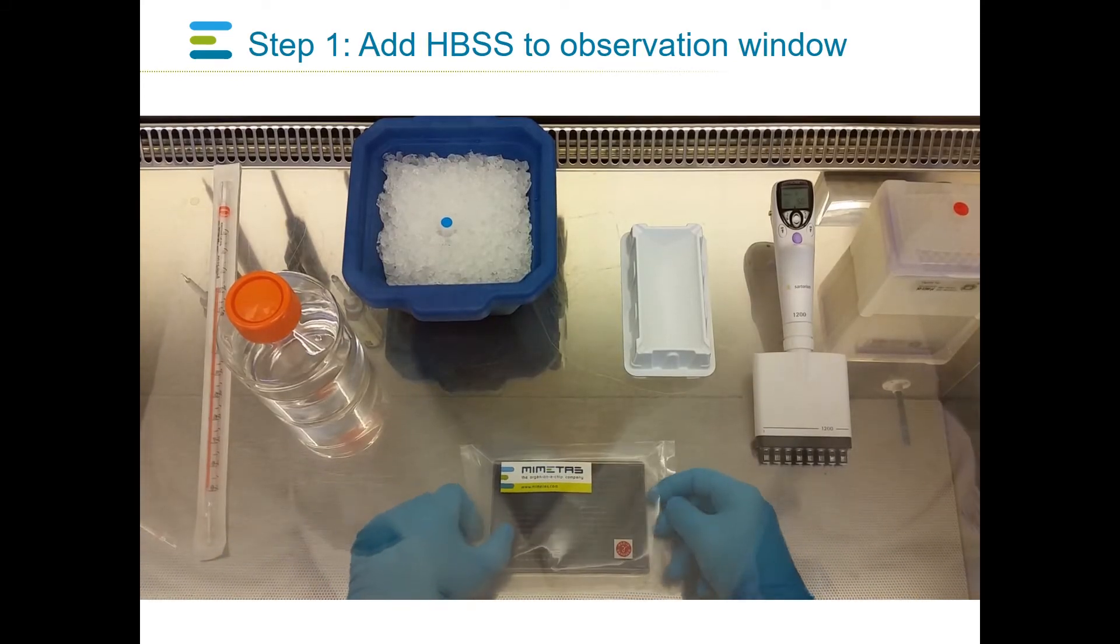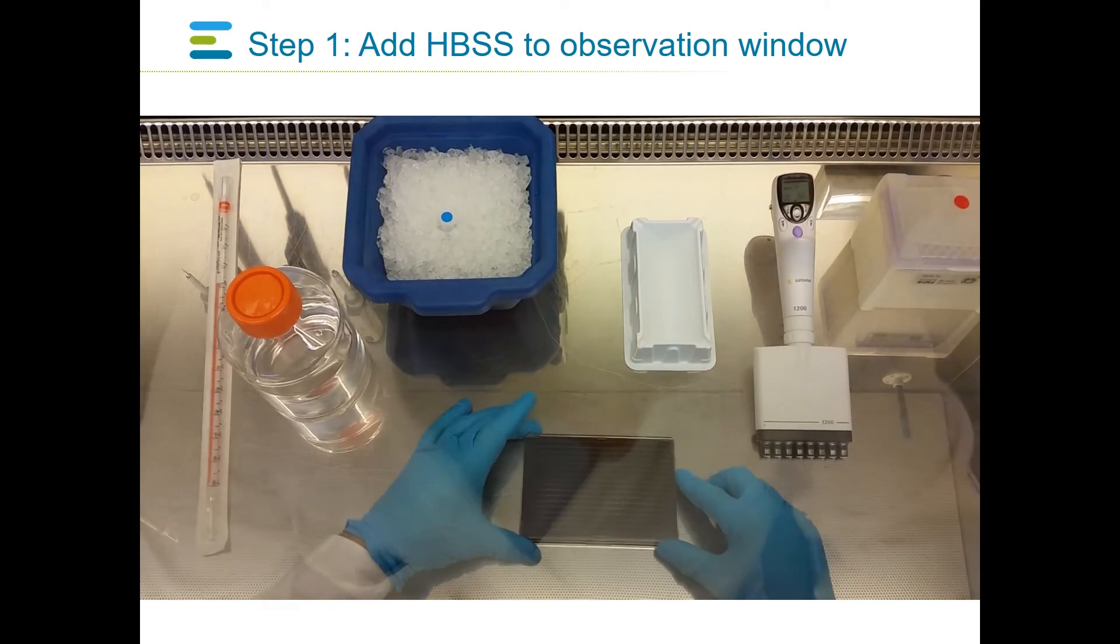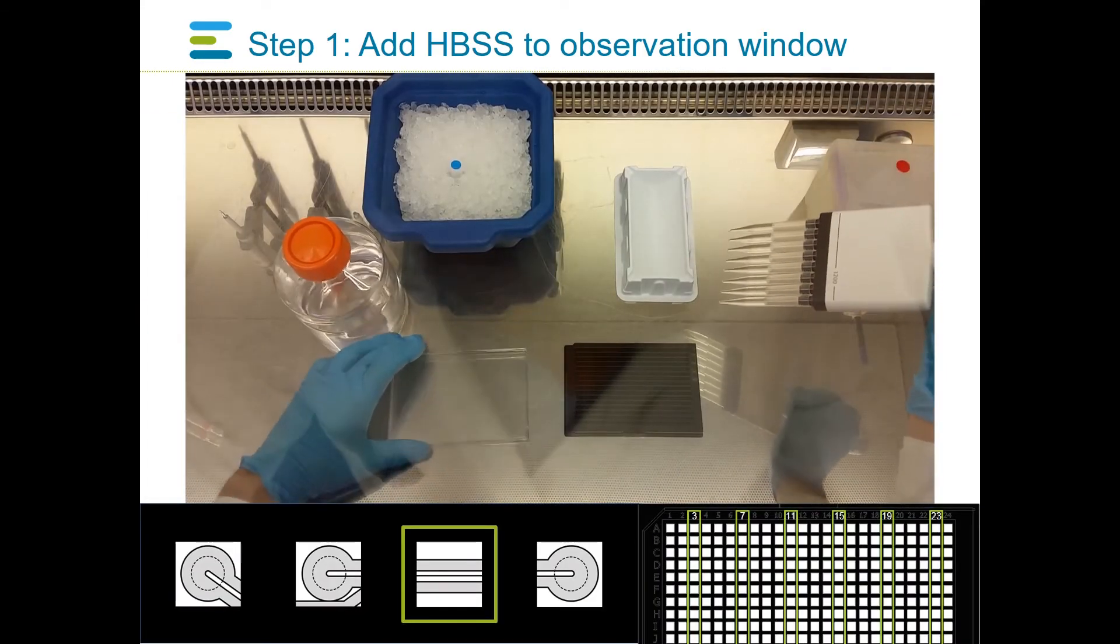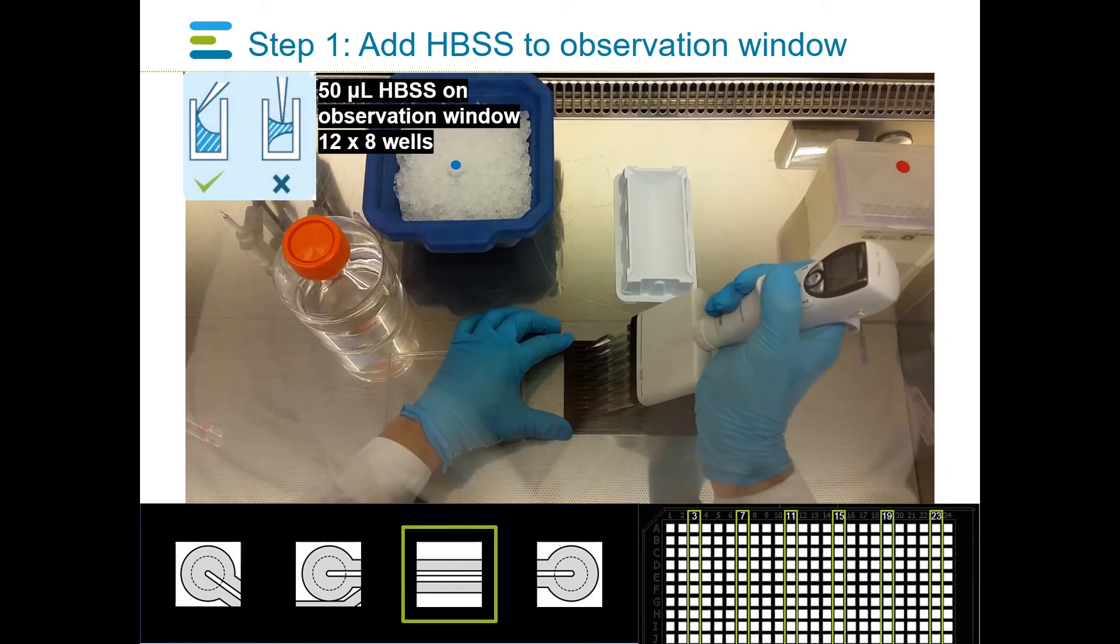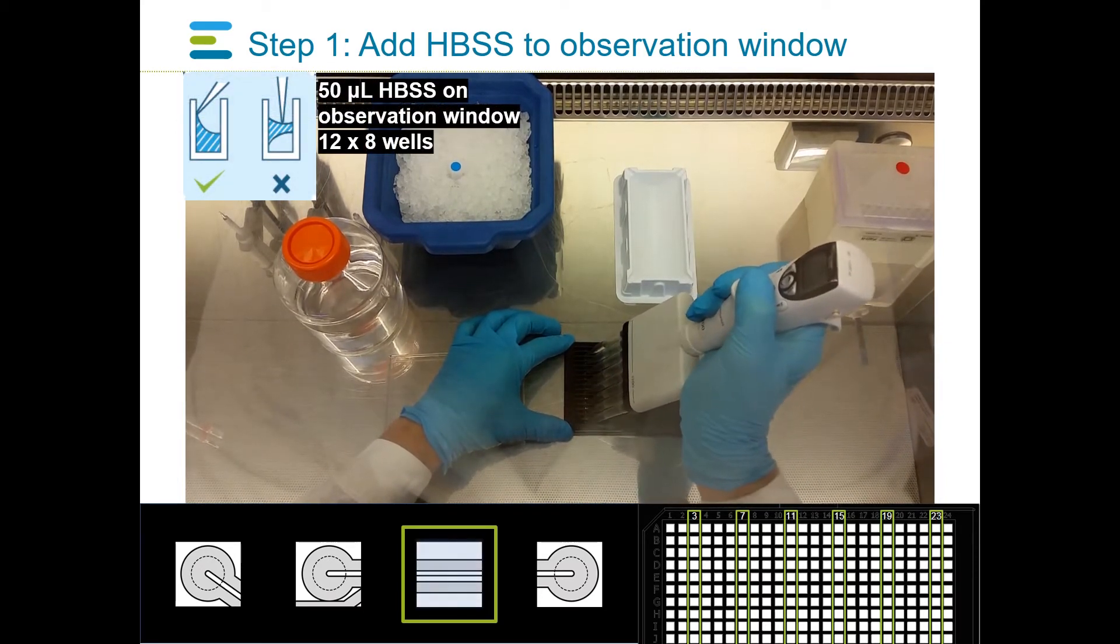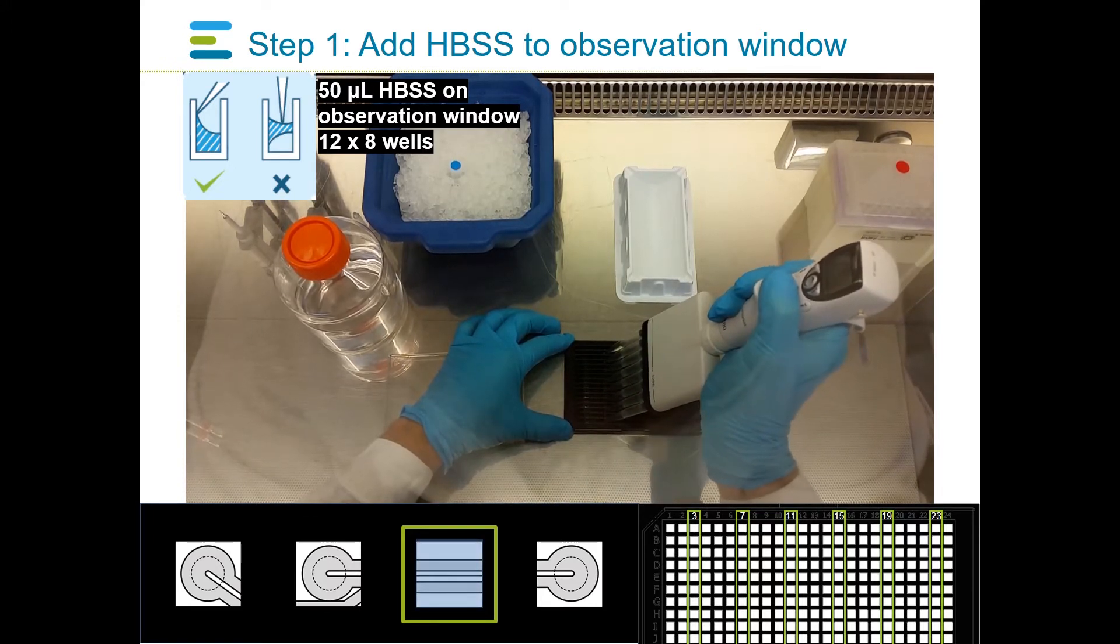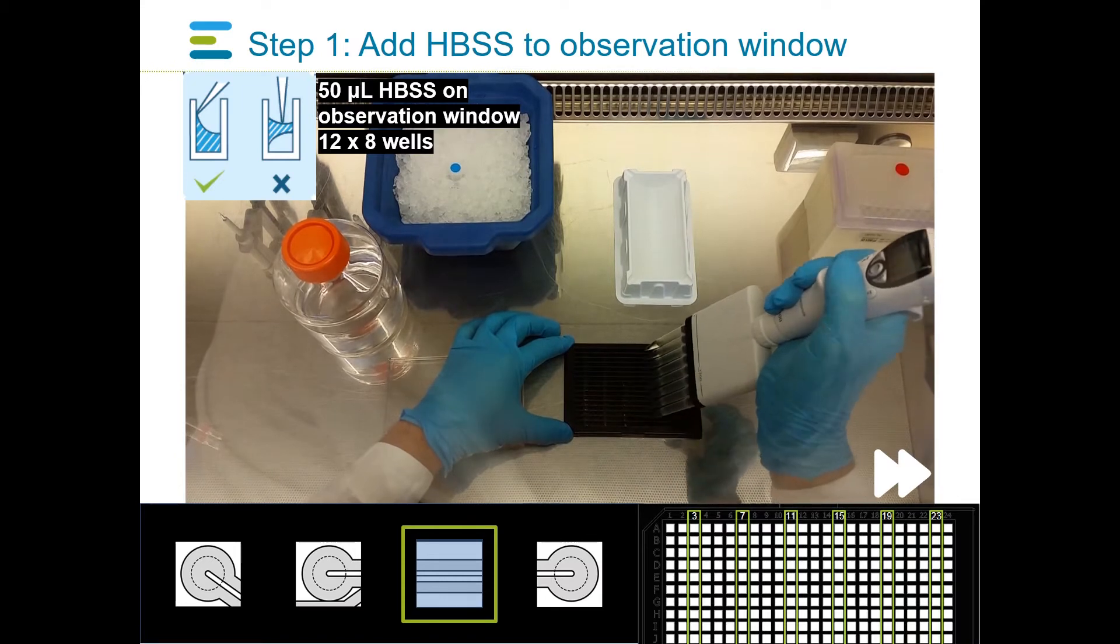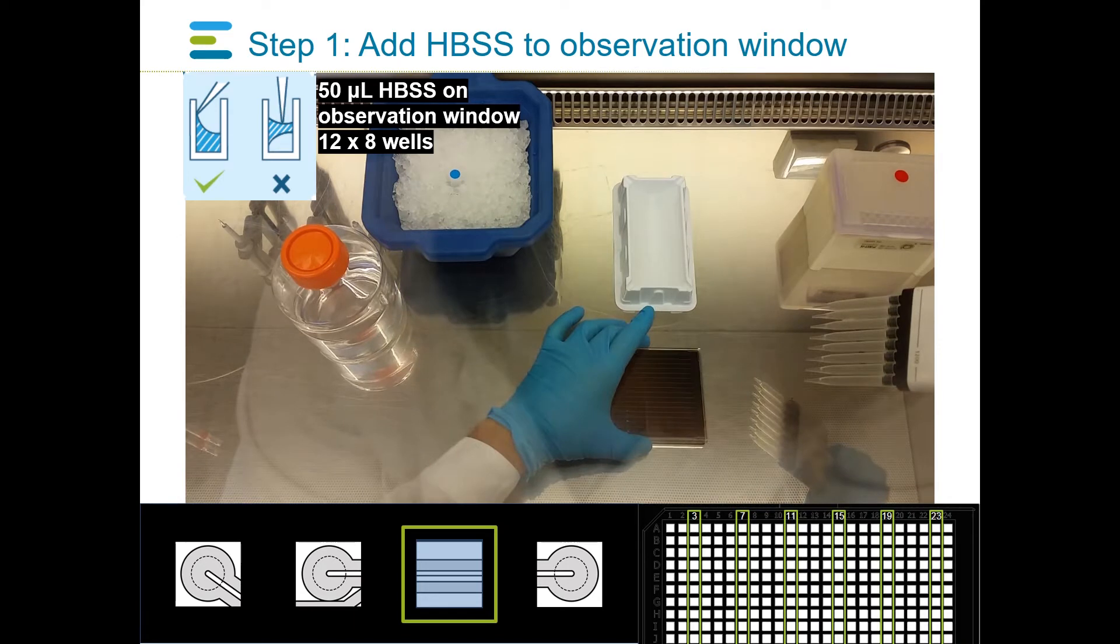After ensuring the packaging is not damaged, please take the organoplate out of its sterile packaging. Using aseptic techniques and a multi-channel pipette, dispense 50 microliters of HBSS on the observation windows in columns 3, 7, 11, 15, 19, and 23. Please dispense the HBSS against the sidewall of the microtiter plate wells to avoid trapping bubbles.